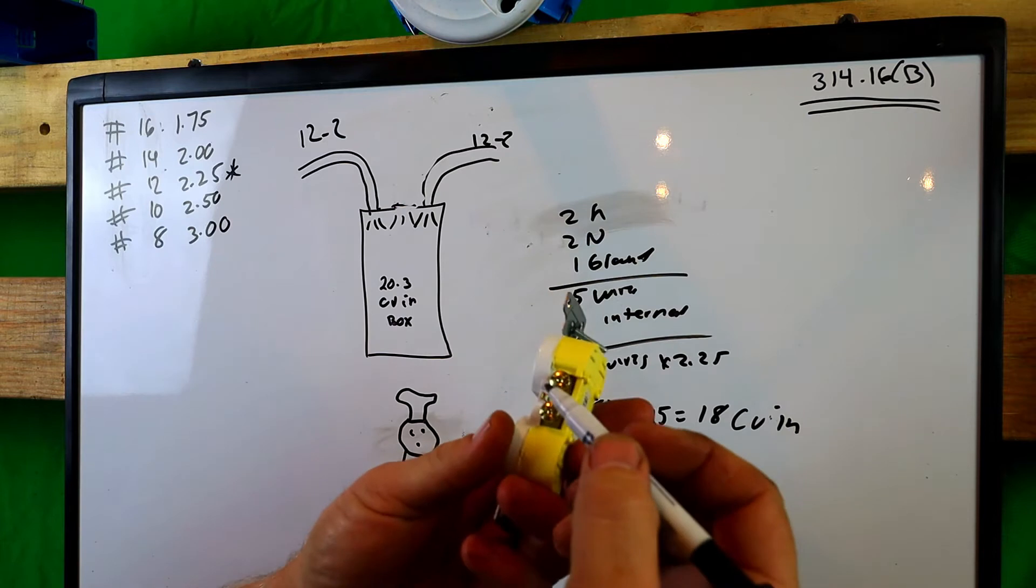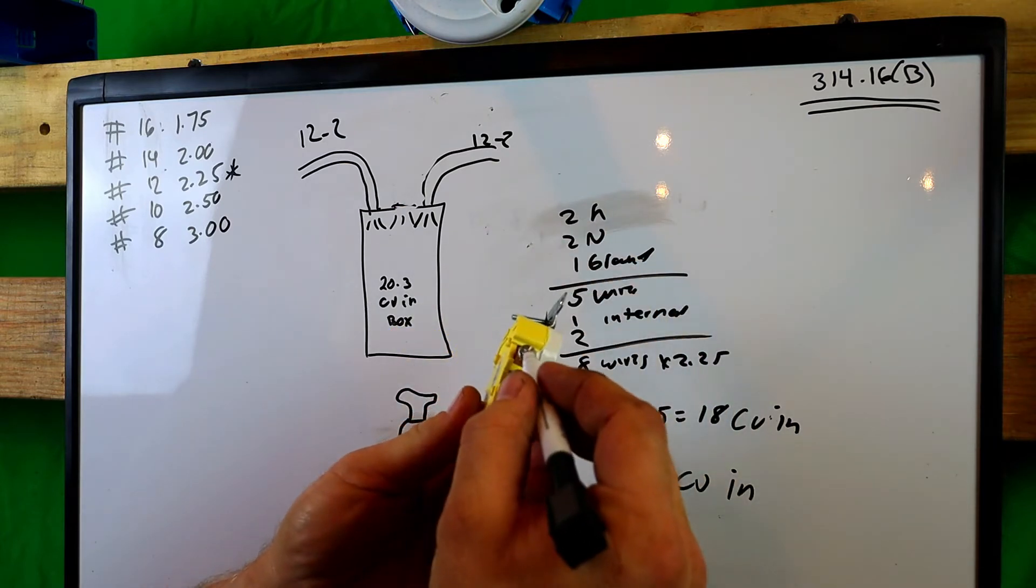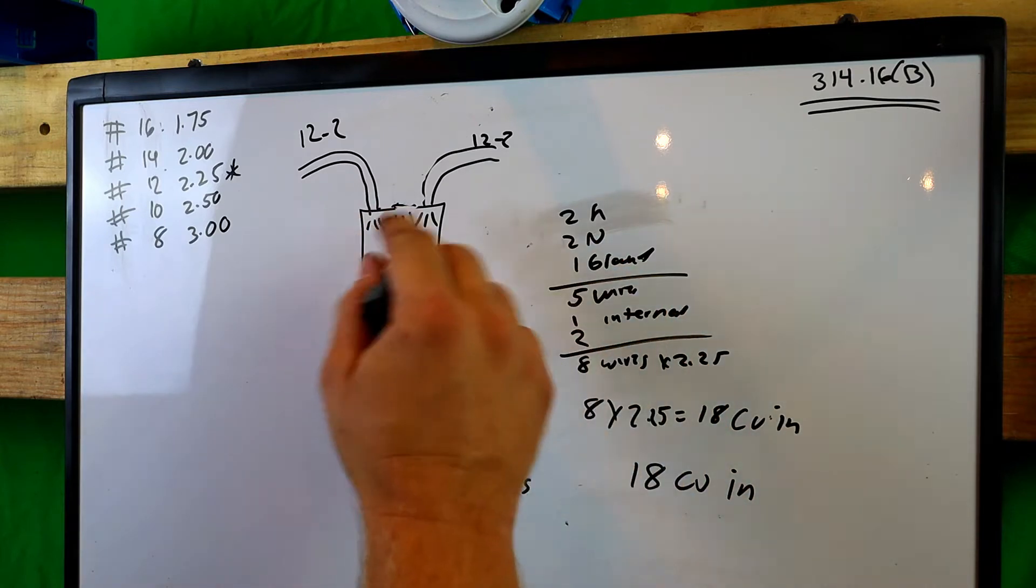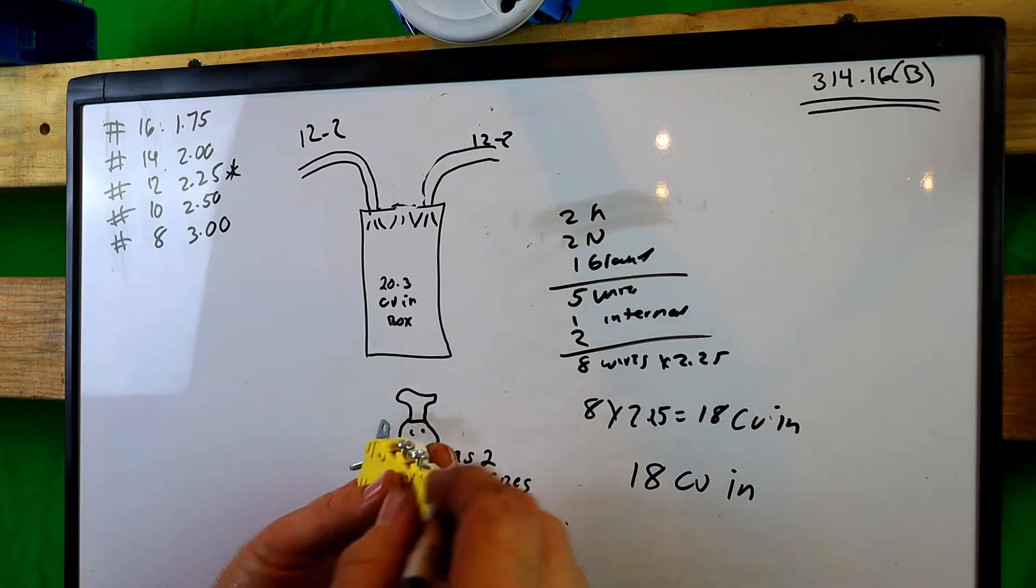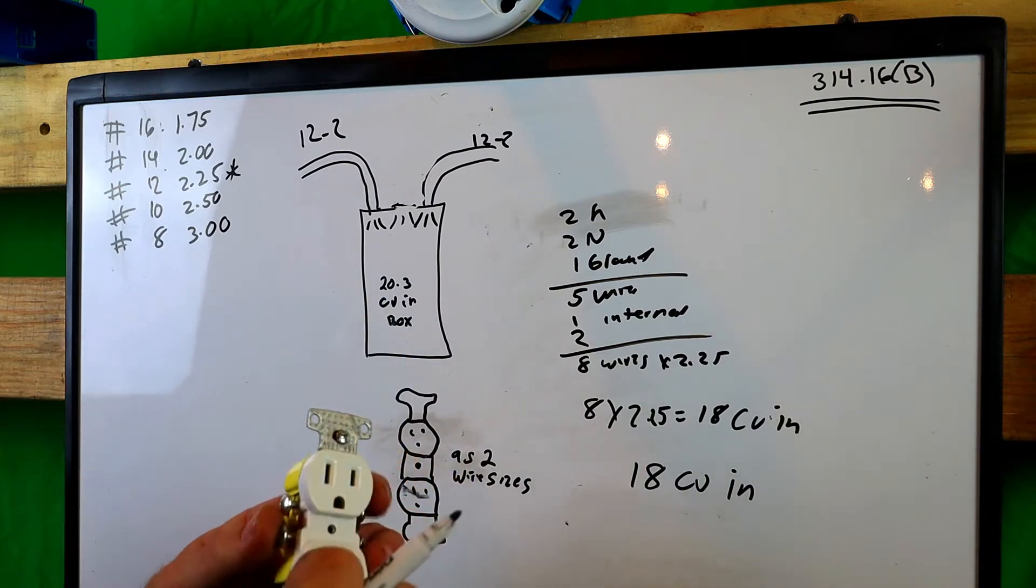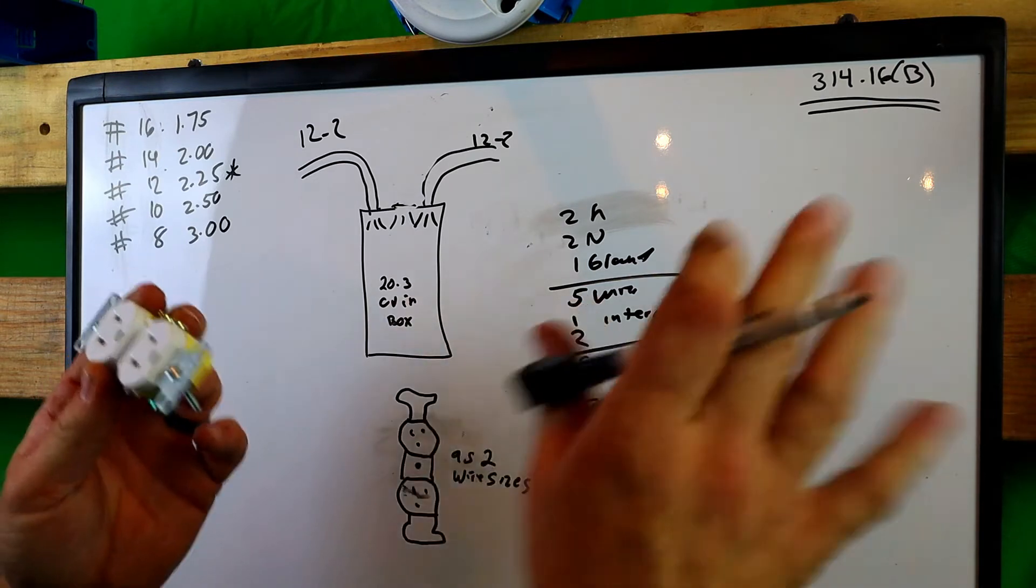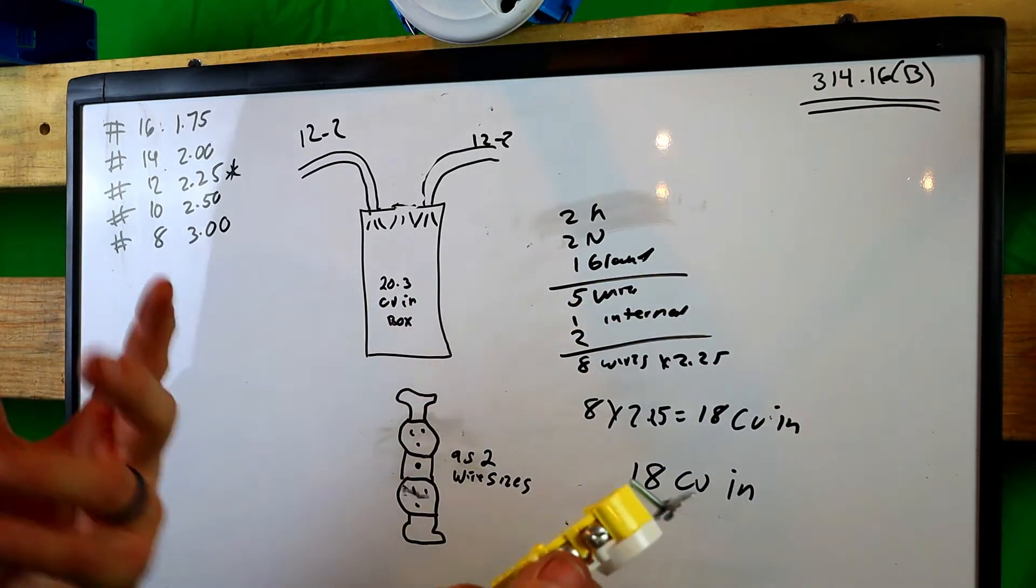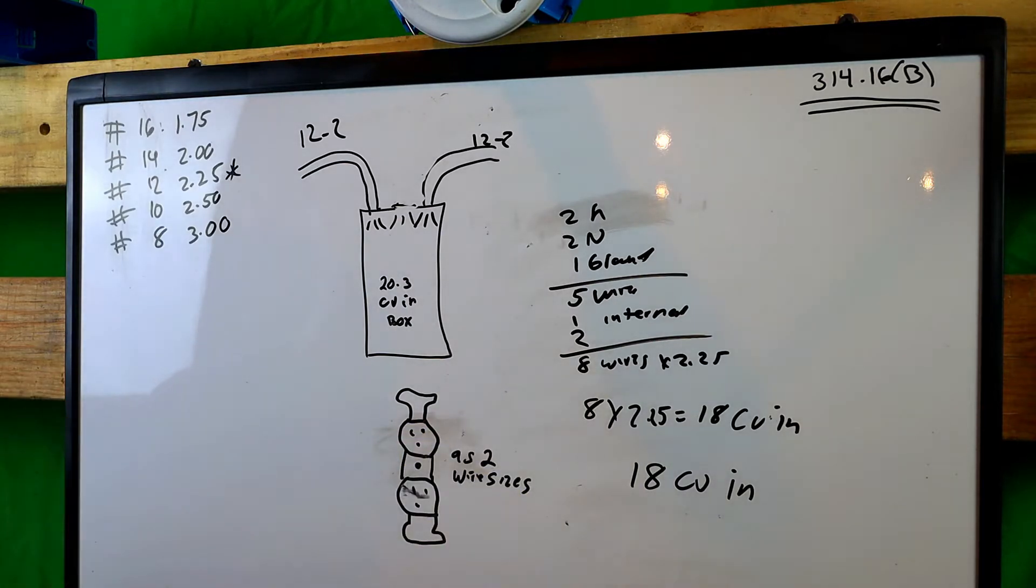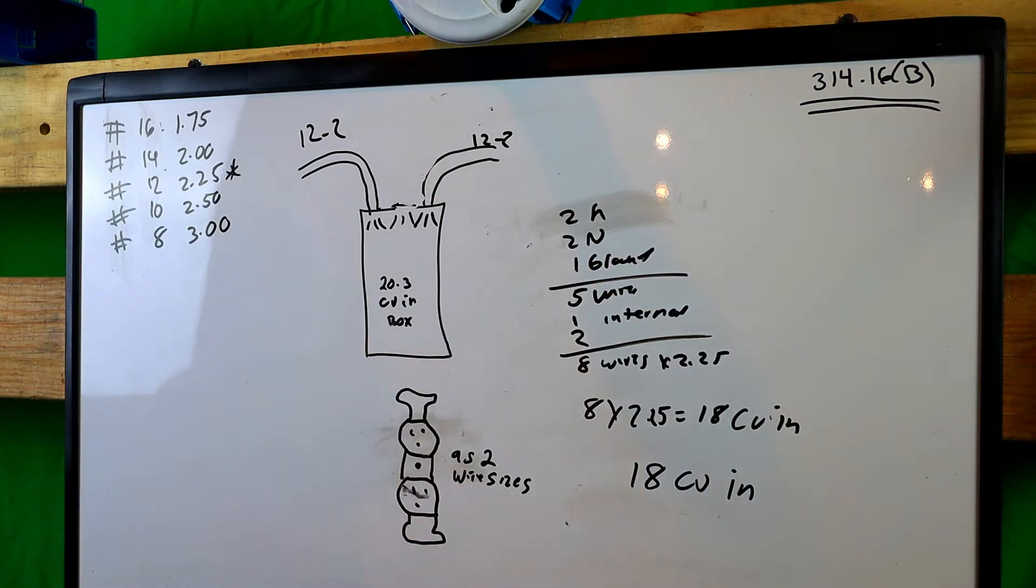All right. So with the receptacle, what you can do with these two 12-2s, you can actually put one hot here, one hot here, because there's two hots, and one neutral there and one neutral there, because there's two neutrals, and then one ground there. You got to make a pigtail on that ground, obviously. And you can do that way. Now, I don't like doing that. Simple fact that if this receptacle goes bad, you know, it's going to take out the rest of your circuits. Now, is that a big deal on a house? No. Is it quick and easy? Yes. Does it look like crap? I think so personally, but it's up to you. You're the be the one wiring your house or whatever you're wiring. So make your own assumption on that. And we'll go from there.